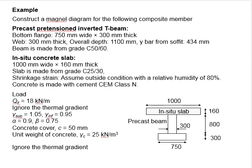Now let us try an example to construct a moment diagram for the composite beam. The beam section is as shown here - there will be an in-situ slab and also the precast beam. The dimensions of the precast beam and the in-situ slab are given here.